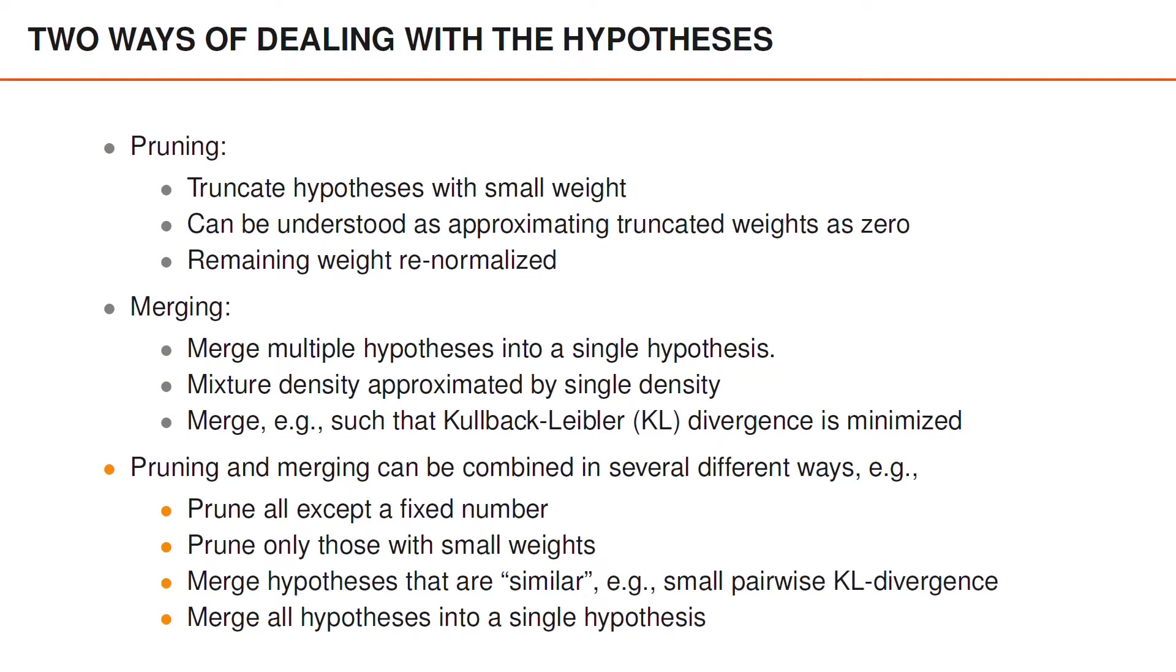And we don't have to choose to do either pruning or merging. Instead, we can combine them in several different ways. For example, we can prune all hypotheses except for a fixed number of hypotheses. We can prune only the hypotheses that have small weights. We can merge hypotheses that are similar in some sense, where similarity can be measured, for example, by the Kullback-Leibler divergence. And we can also merge all hypotheses regardless of how similar they are.